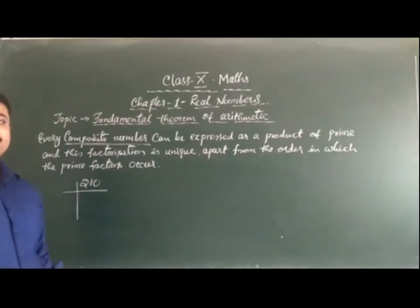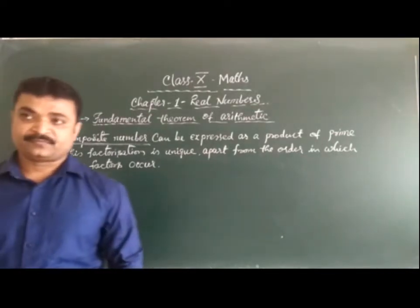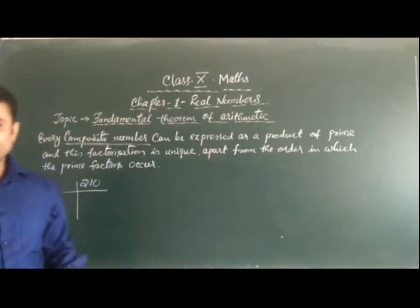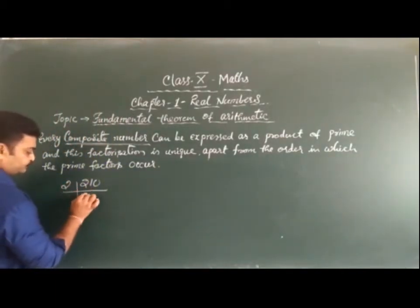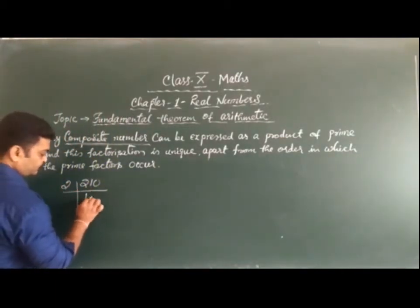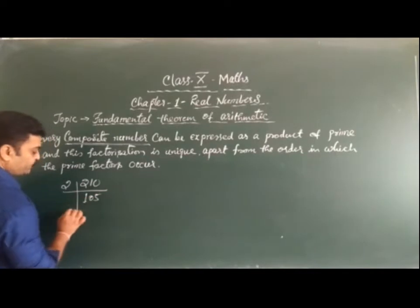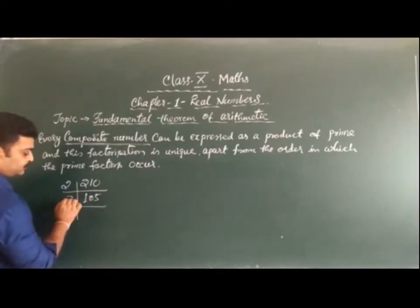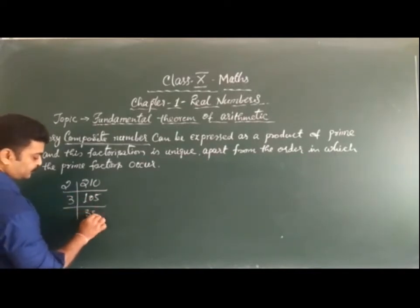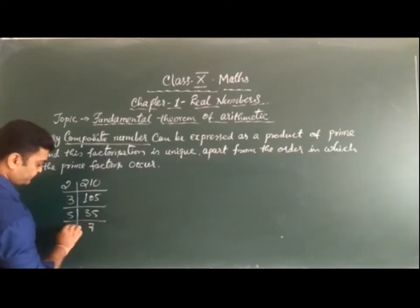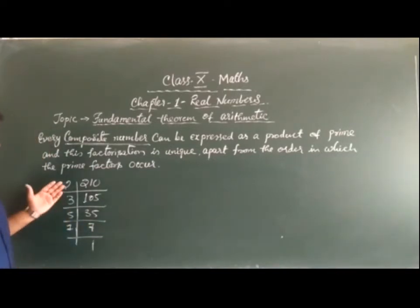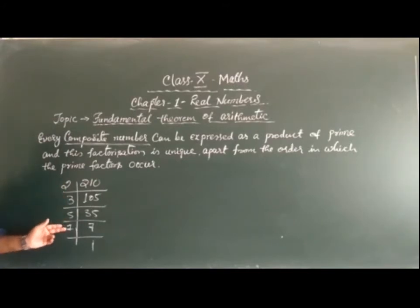Suppose the number is 210. We have to find its prime factorization: 210 divided by 2 gives 105, divided by 3 gives 35, divided by 5 gives 7, and 7 divided by 7 gives 1. So the prime factors are 2, 3, 5, and 7.